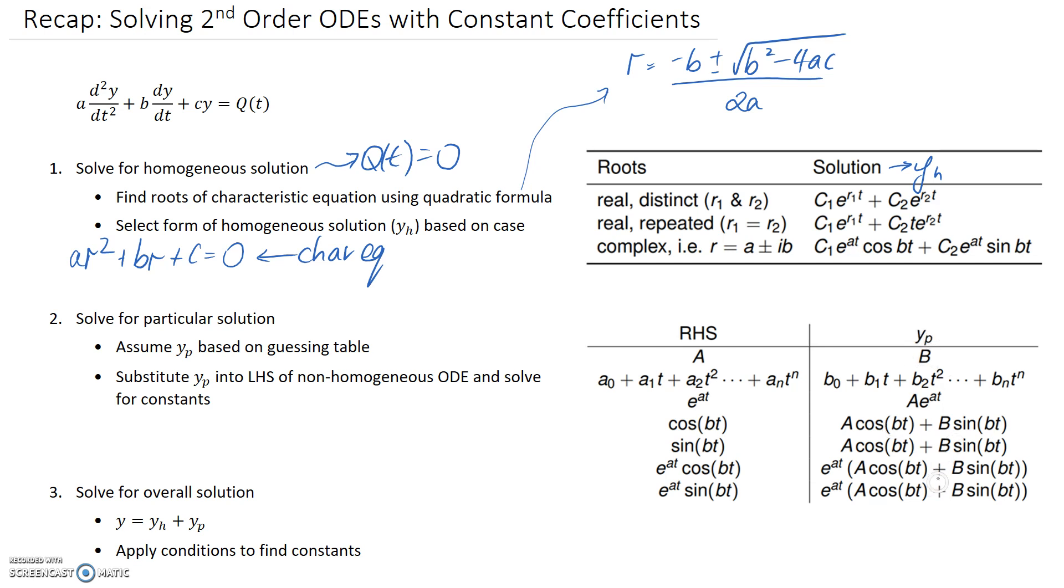So once you've assumed this yp solution, all you need to do is take some derivatives of it and sub it back up in here. Substituting yp into the left-hand side of the non-homogeneous ODE, so that's where we're considering q of t to actually be a function, and we need to solve for those constants, so the a's, the big B's here, that's what we're going to be looking for.